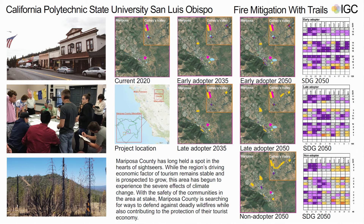Moving on to the late adopter, unfortunately we do not see the transportation infrastructure, and we see a reduction in mixed-use living, but we do see the benefits of energy and water infrastructure. Then moving on to the non-adopter, we don't see mixed use or transportation infrastructure. Instead, we see low residential sprawl happening within the county and a reduction in water and energy infrastructure.